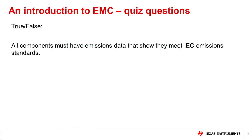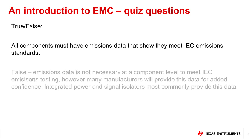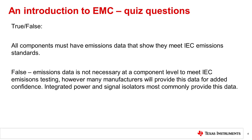True or false: all electronics including digital isolators produce some level of emissions, so all components must have emissions data that meets IEC emission standards. False. While all electronics do produce emissions anytime an electric field is present, for most digital isolators the level of emissions is negligible and emissions data is typically not necessary to meet IEC standards at a system level. For isolators with integrated power, emissions become more significant, and for this reason manufacturers will often provide emissions test data for isolated power devices.